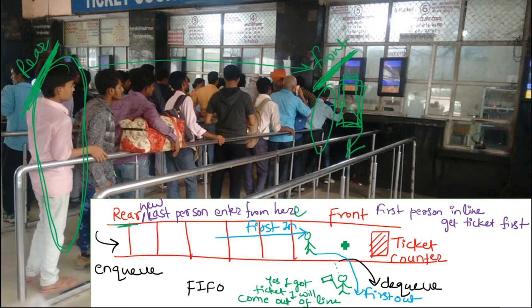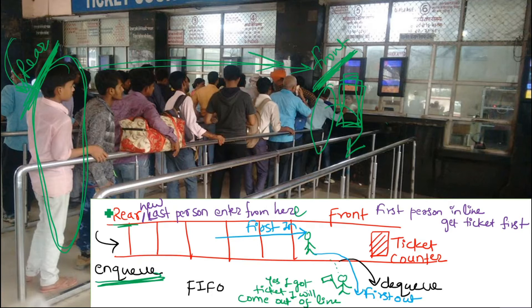This is first in, first out. The operation of coming out from the front is called dequeue. If a new person wants to enter the line, they must enter from the last position — otherwise everyone will shout that you must enter from the end of the line. This entering operation is called enqueue, where you enter from the rear. So a queue follows first in, first out.